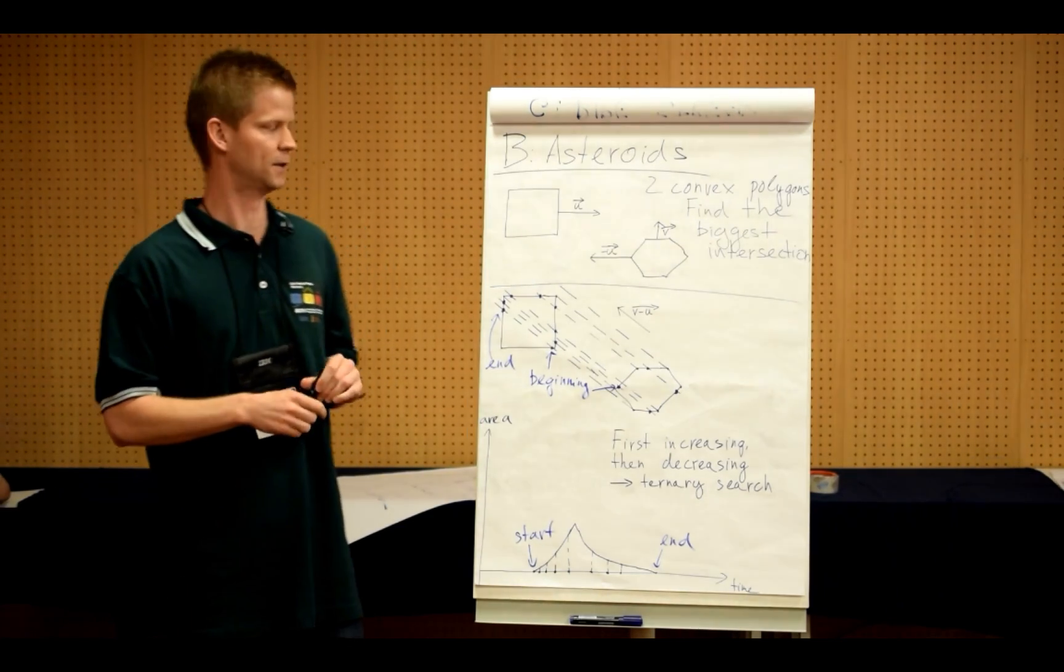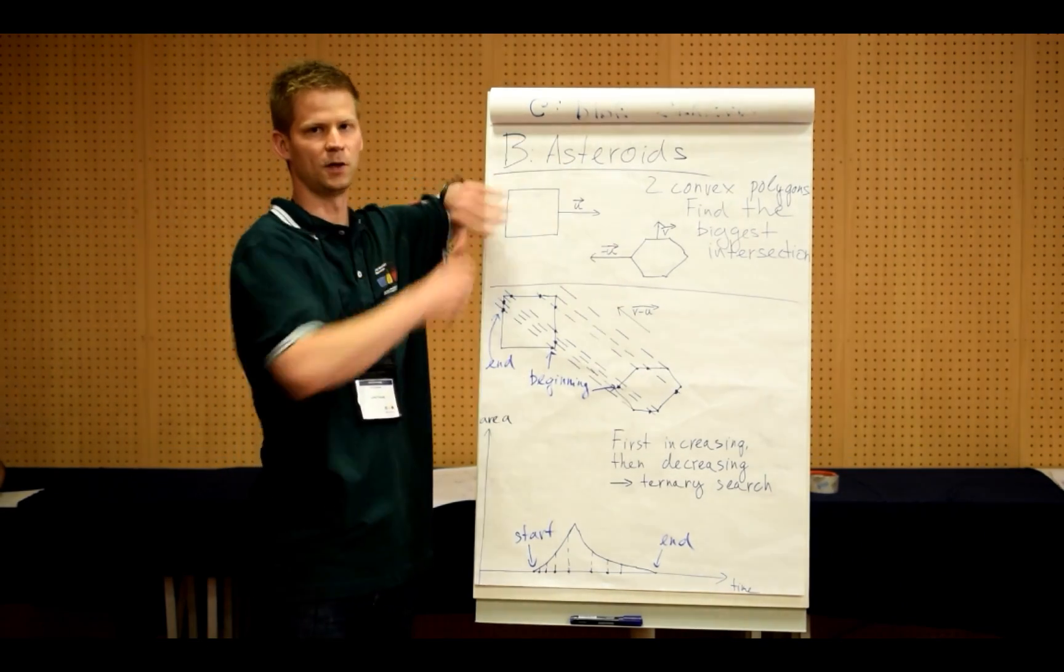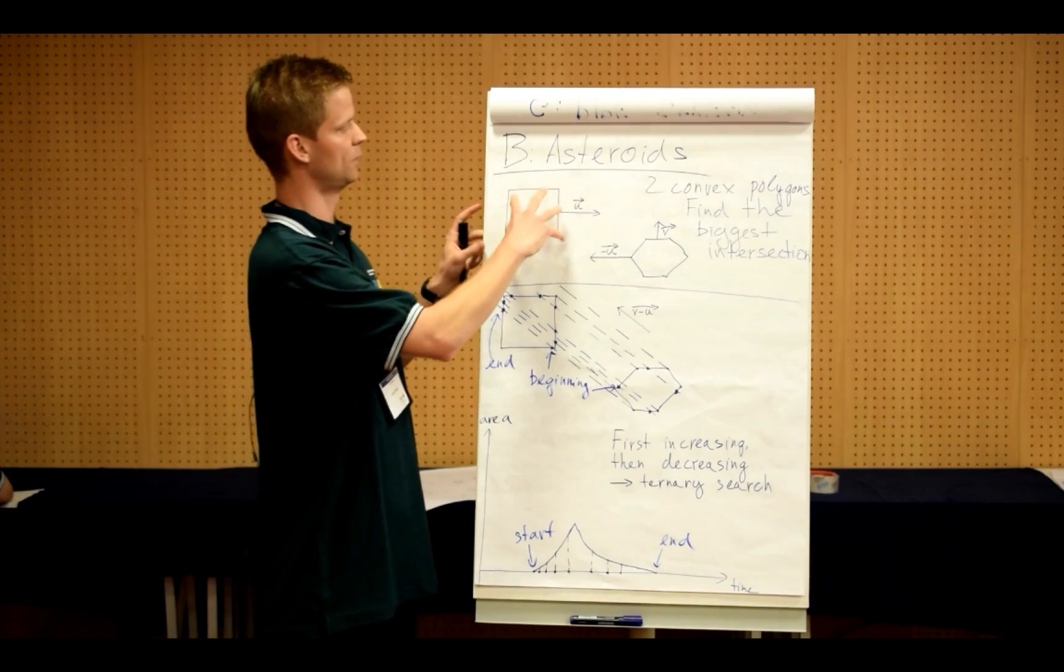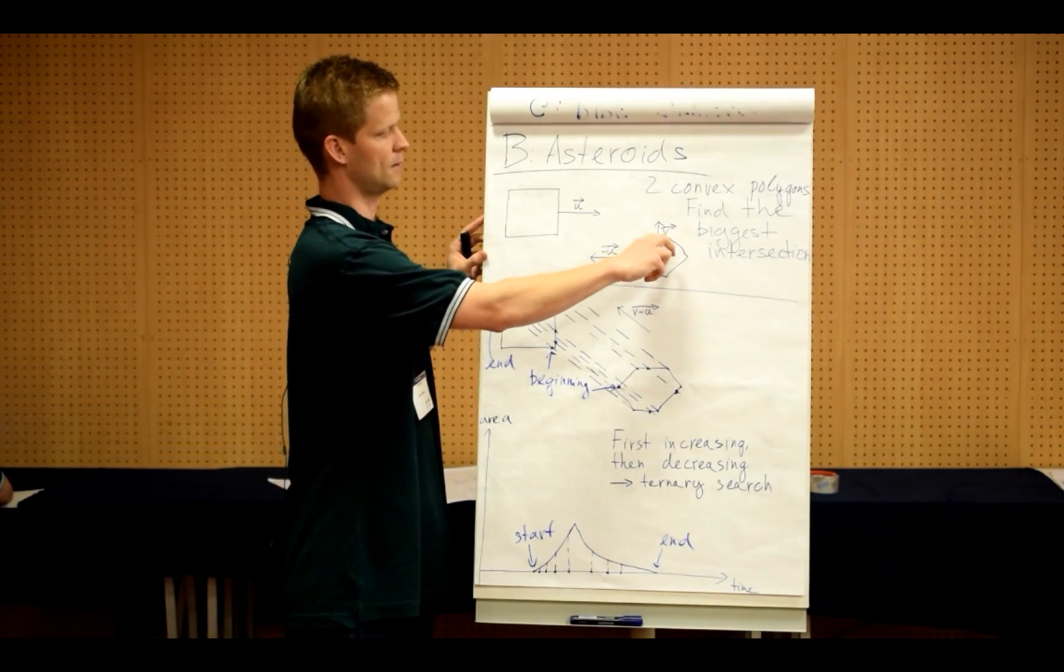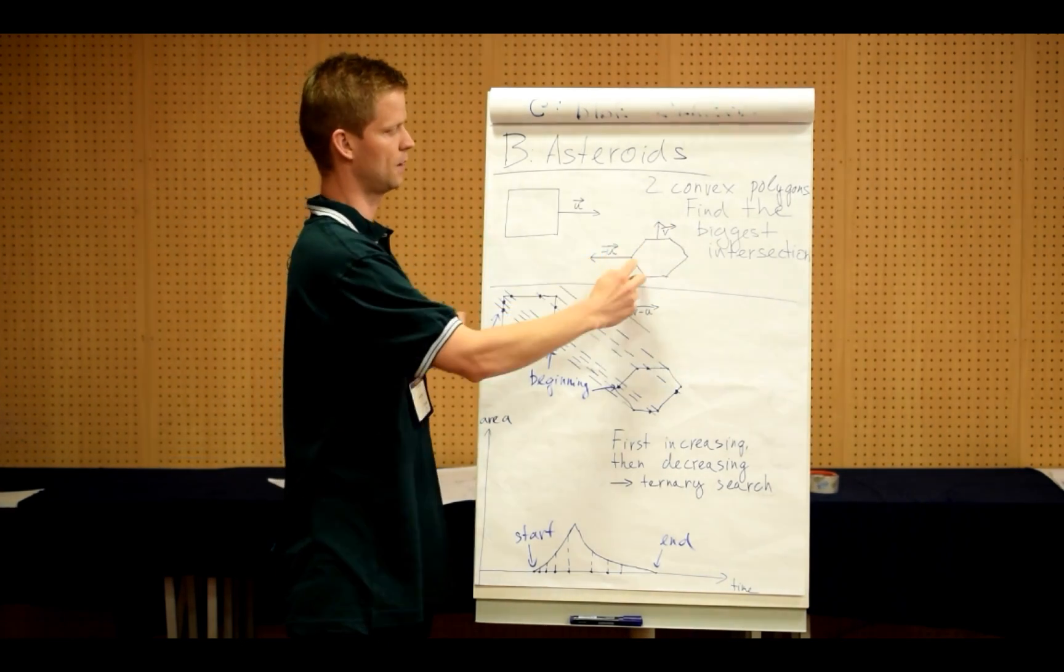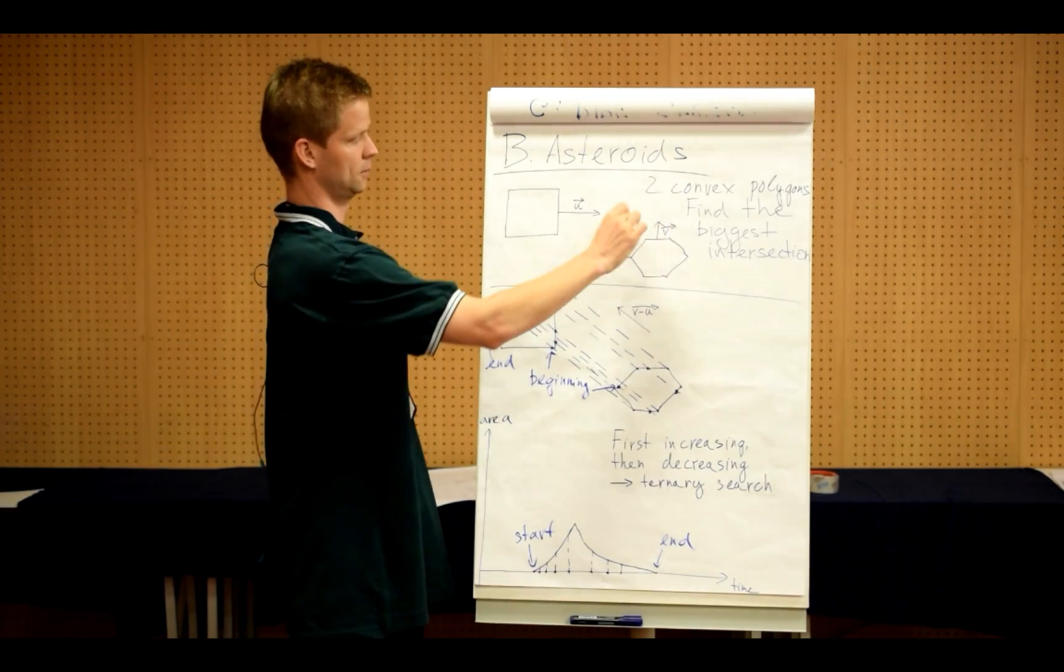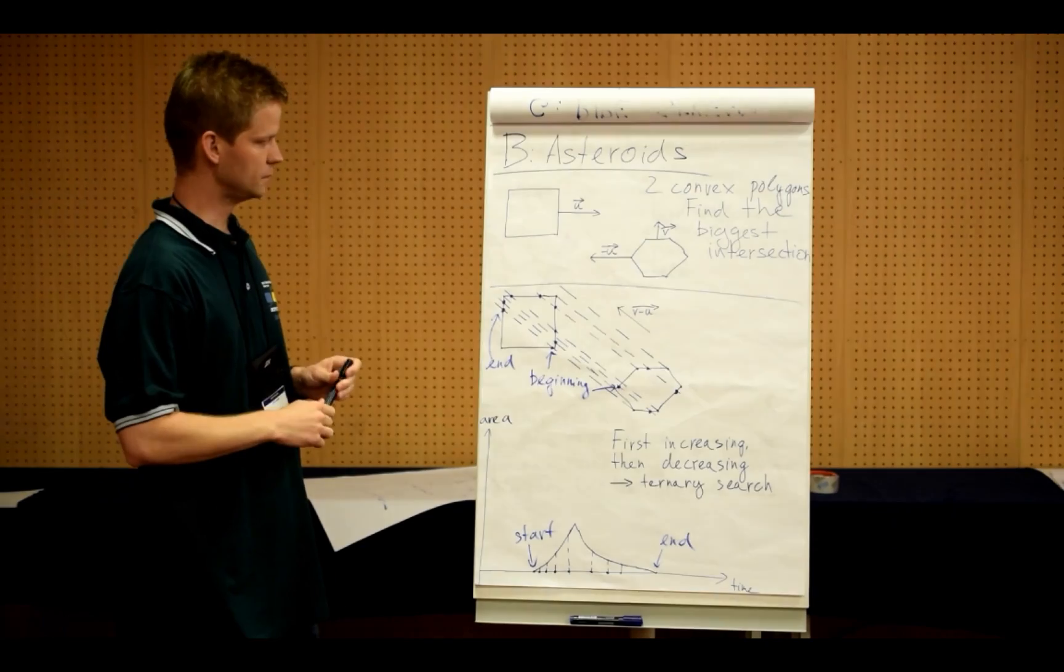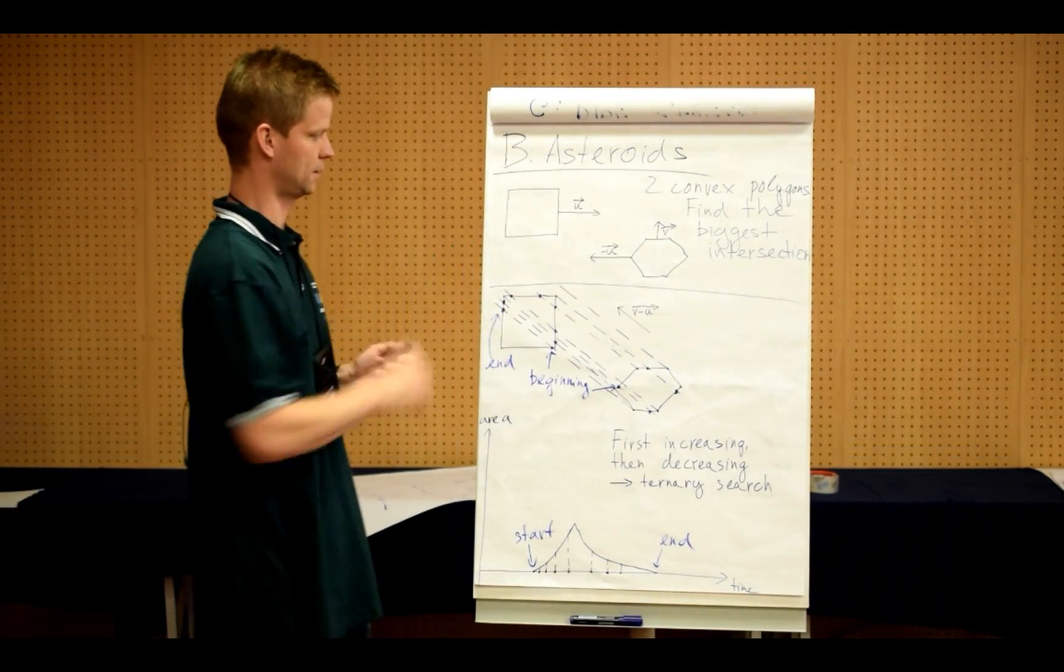The first observation we should make is that we can hold one polygon still and only move the other one because speed is relative. So instead of moving this one with speed u and this one with speed v, we're going to consider this one moving with speed v and minus u. We're just going to add these speeds together, so we can consider the polygon moving towards up and left.